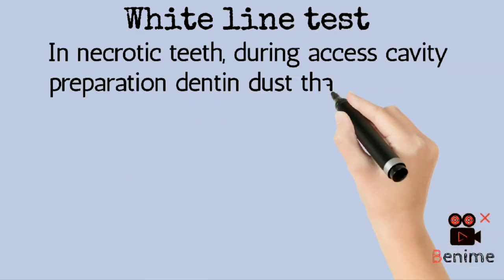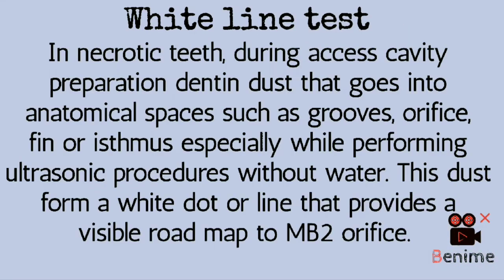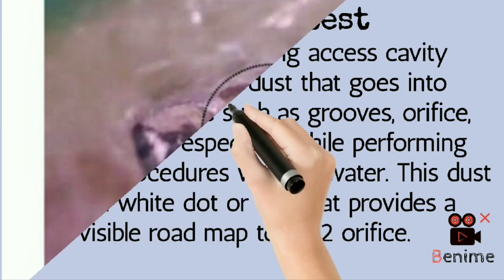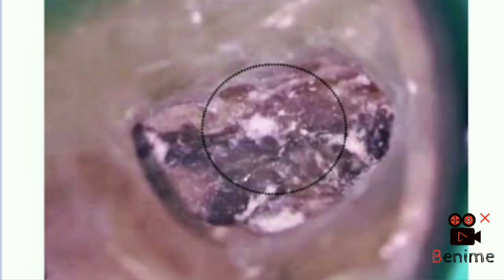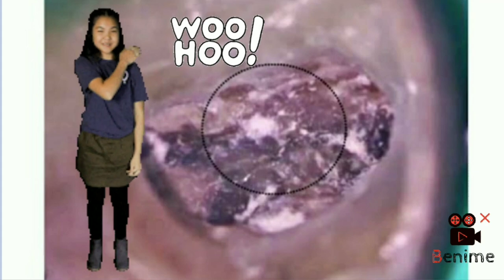The next test is the white line test. This test is only for necrotic teeth. During access cavity preparation or while performing an ultrasonic procedure without water, dentinal dust gets collected into any accessible anatomical areas such as grooves, orifices, fins, or isthmus. This collected dust will appear as a white line. Follow this white line and you will end up revealing the secret canal.